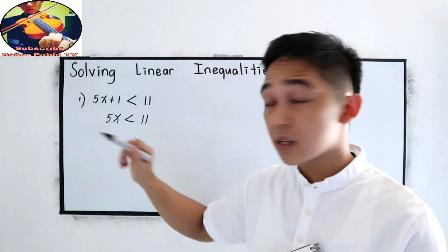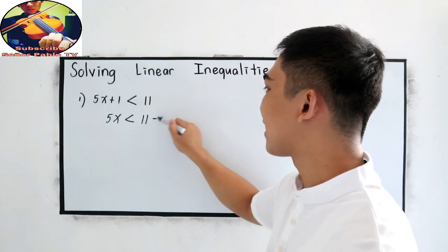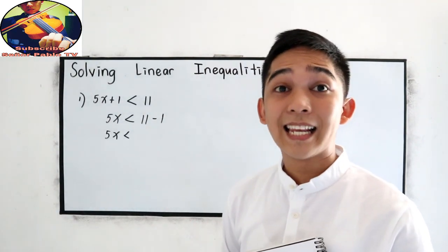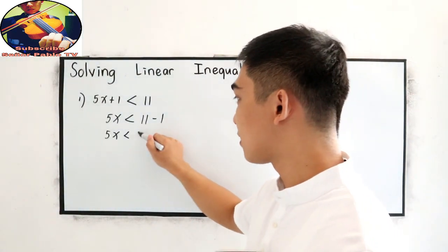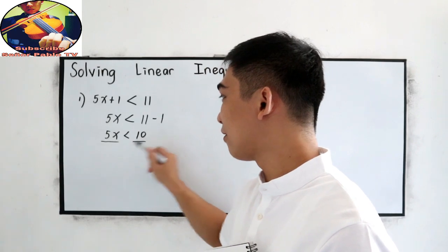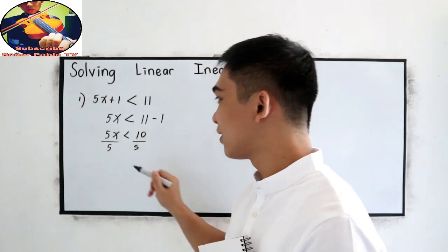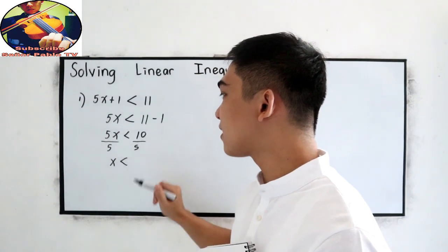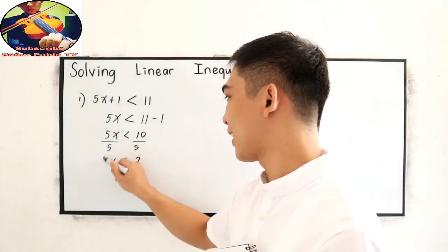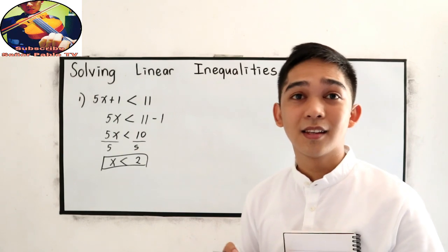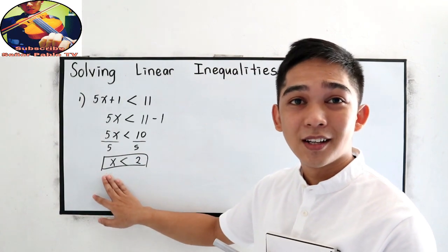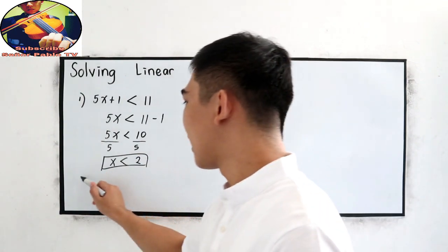Transpose positive 1, that is negative 1. So 5x is less than 11 minus 1, which is 10. Now divide by 5. So x is less than 10 divided by 5, that is 2. Therefore x is less than 2.